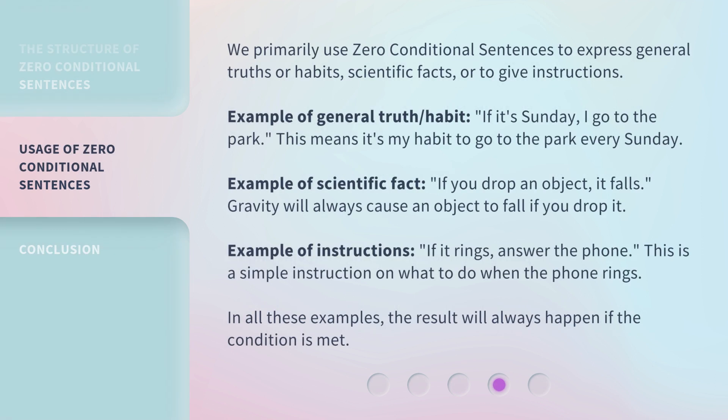We use zero conditional sentences to express general truths or habits, scientific facts, or to give instructions. Example of a general truth or habit: if it's Sunday, I go to the park — meaning it's my habit to go to the park every Sunday. Example of a scientific fact: if you drop an object, it falls — gravity will always cause an object to fall if you drop it. Example of instructions: if it rings, answer the phone — a simple instruction on what to do when the phone rings. In all these examples, the result will always happen if the condition is met.